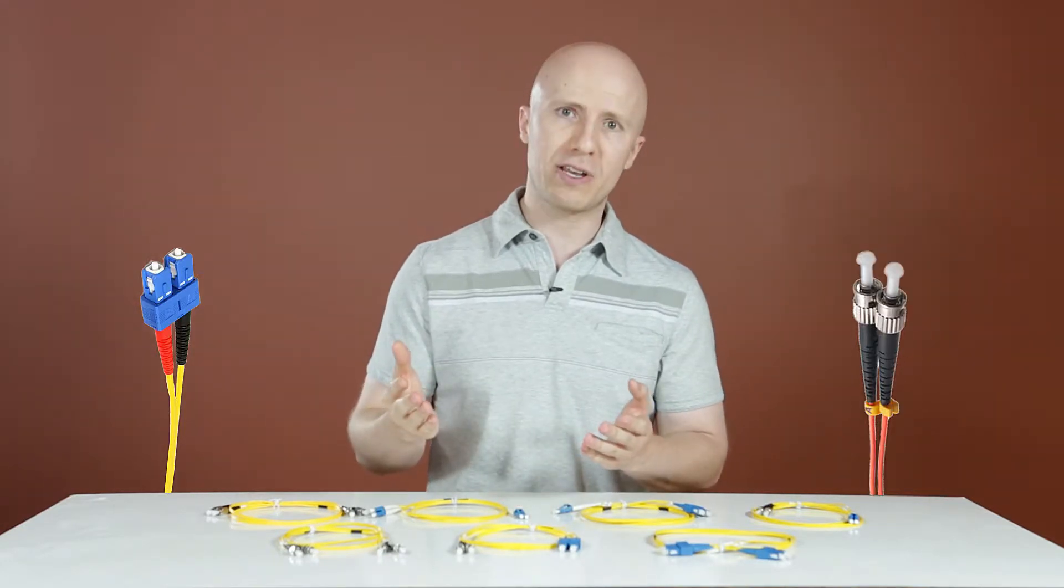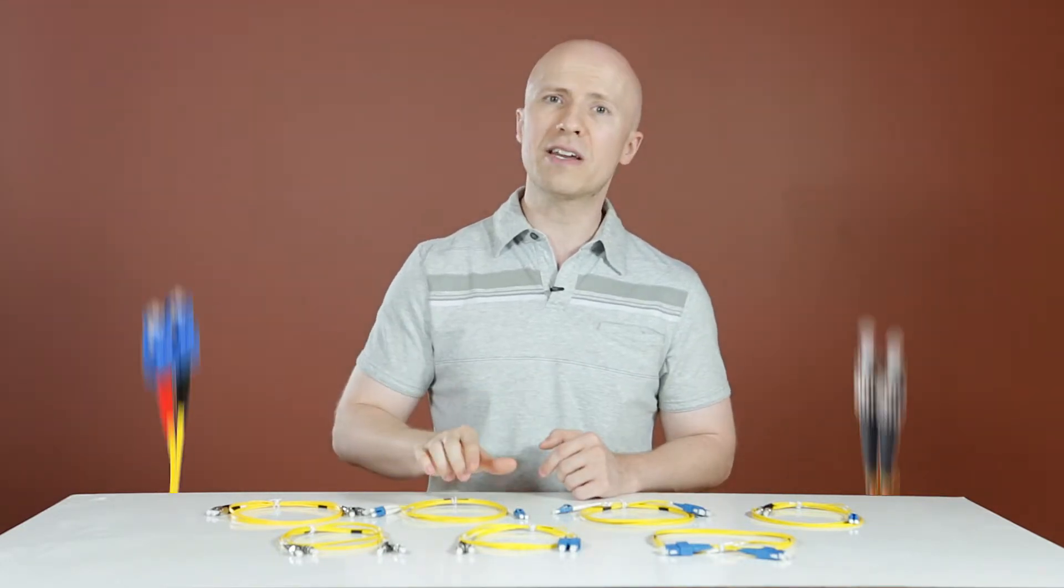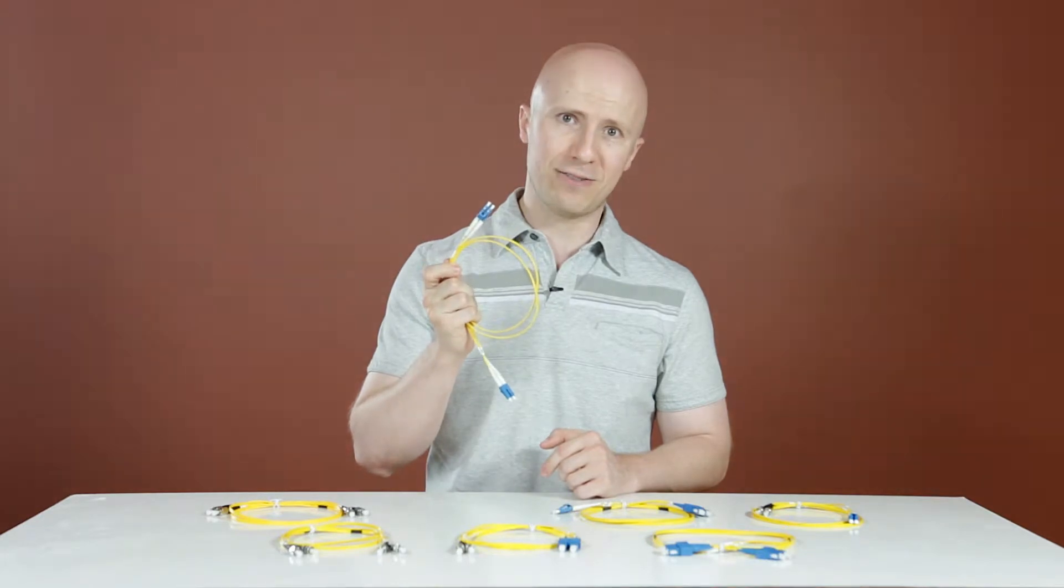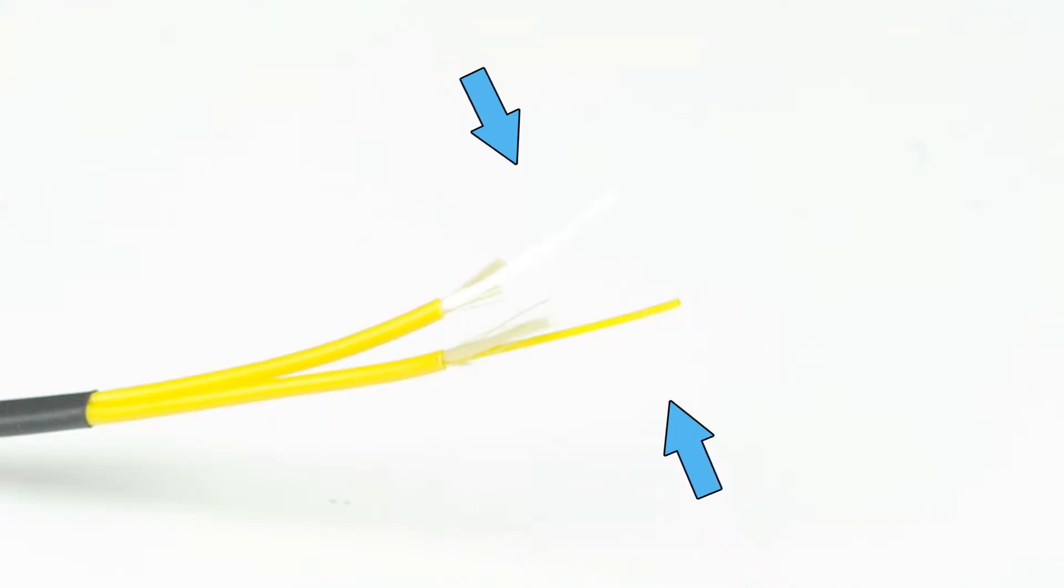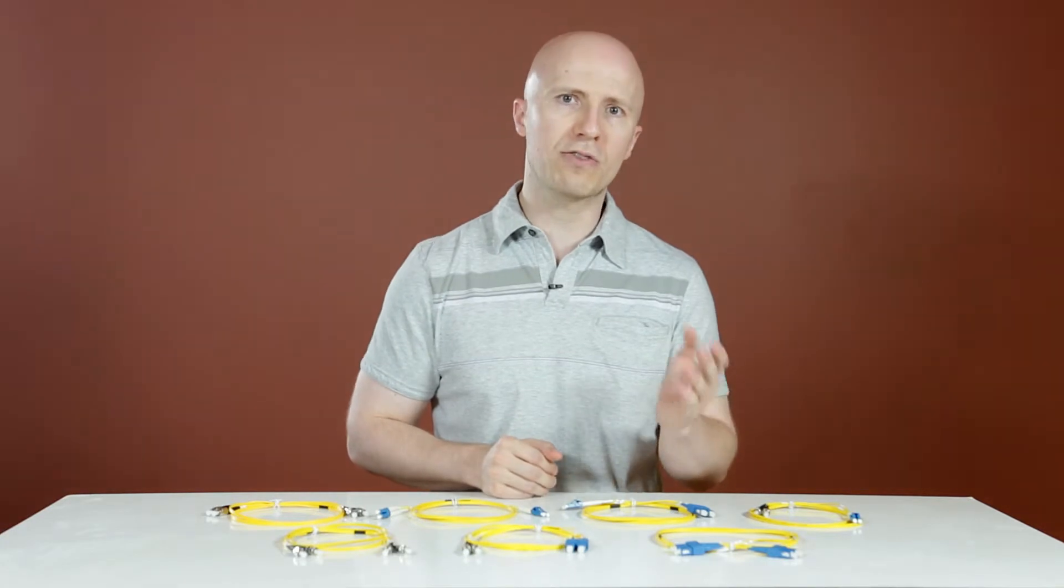They can easily be identified by their yellow jackets. With their small core, single-mode cables are virtually immune to electrical interference. This makes single-mode cables the ideal fiber cable for ISPs and other high-speed carriers that need to provide connectivity over long distances.